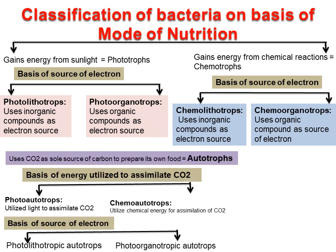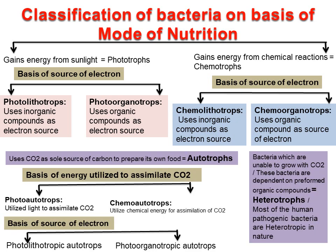Bacteria which use carbon dioxide as the sole source of carbon to prepare their own food are called autotrophs — they are capable of independent existence. Those bacteria which are unable to grow with carbon dioxide and are dependent on preformed organic compounds are called heterotrophs. Most human pathogenic bacteria are heterotrophic in nature.